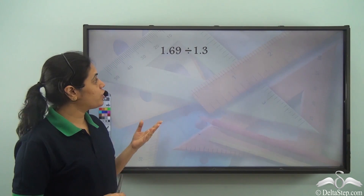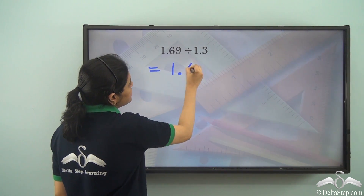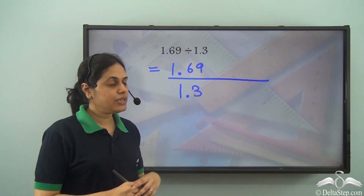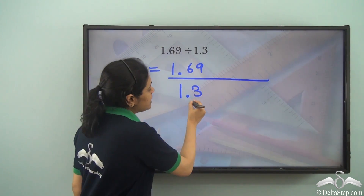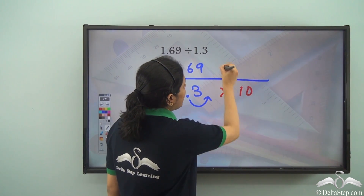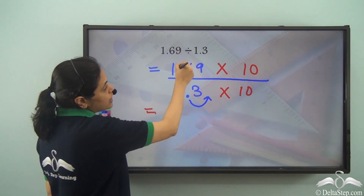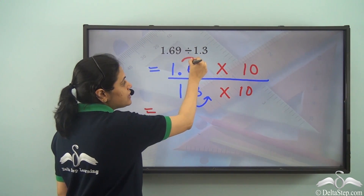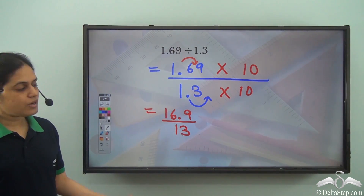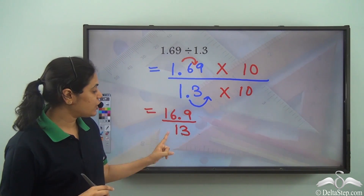Now can you solve this on your own? What is 1.69 divided by 1.3? I have 1.69 divided by 1.3. The divisor has a decimal point, so that has to be removed — I need to move it to the right by 1 place. So I multiply by 10. I multiply both the numerator and denominator by 10. Now 1.69 into 10 shifts the decimal point one place to the right. So this becomes 16.9 divided by 13. The decimal point is still there but now it is only in the dividend, not in the divisor.